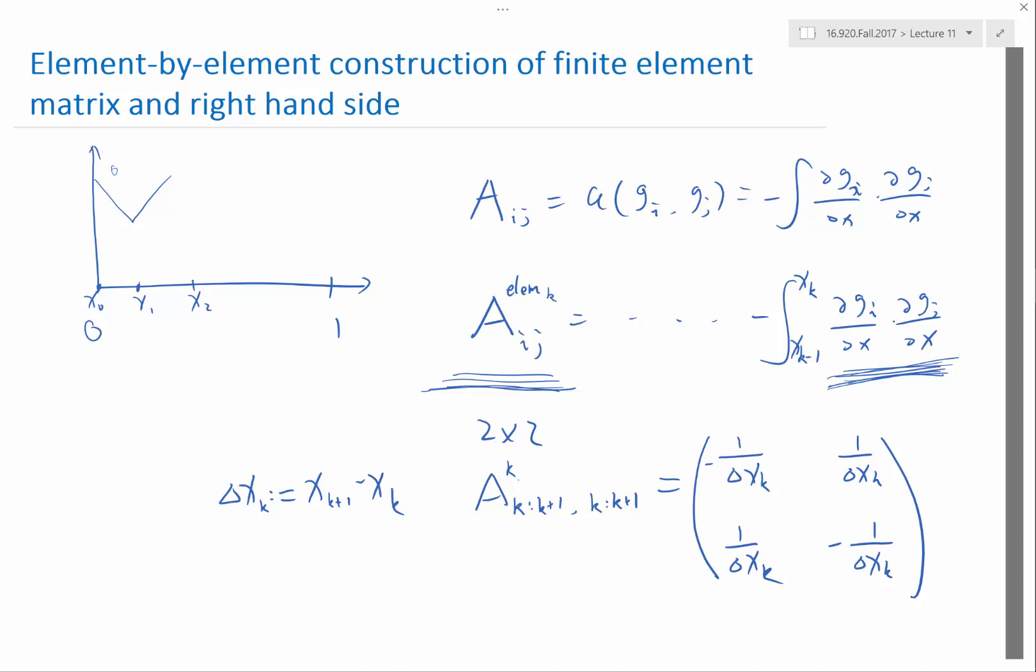I don't think there is a factor of 2 because the product is basically the derivative of each function is either plus 1 over delta x_k or minus 1 over delta x_k. The product is 1 over delta x_k squared, the domain is delta x_k.